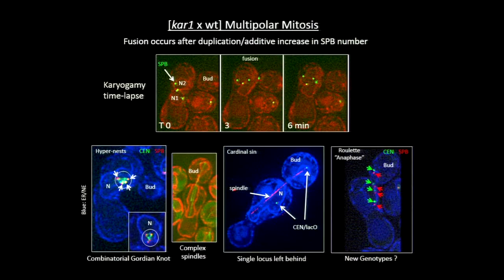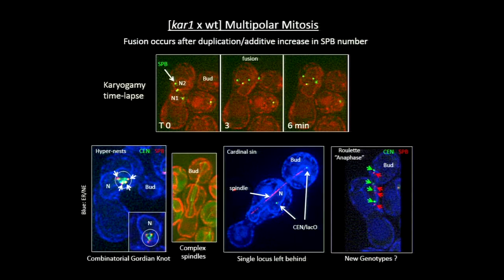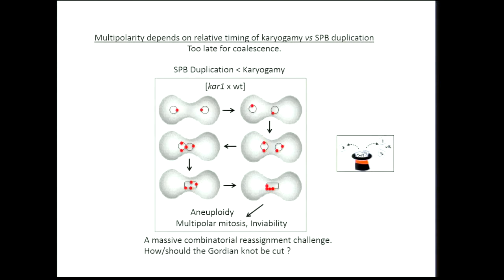These cells end up in a hyper-nest situation where one, two, three, four spindle pole bodies are all fighting over those clustered centromeres pinioned among them. This represents a Gordian knot of all these elements trying to sort out the combinatorial nightmare in which they find themselves. The spindles are frequently complex — you often find more than one spindle in a single nucleus. A lac operator-tagged locus is at one end of the spindle, but the second copy, which should be exactly at the other end of the same spindle, is instead lost off in empty space in that nucleus. Absolute terrible nonconformity with regard to segregation of chromosomal elements.